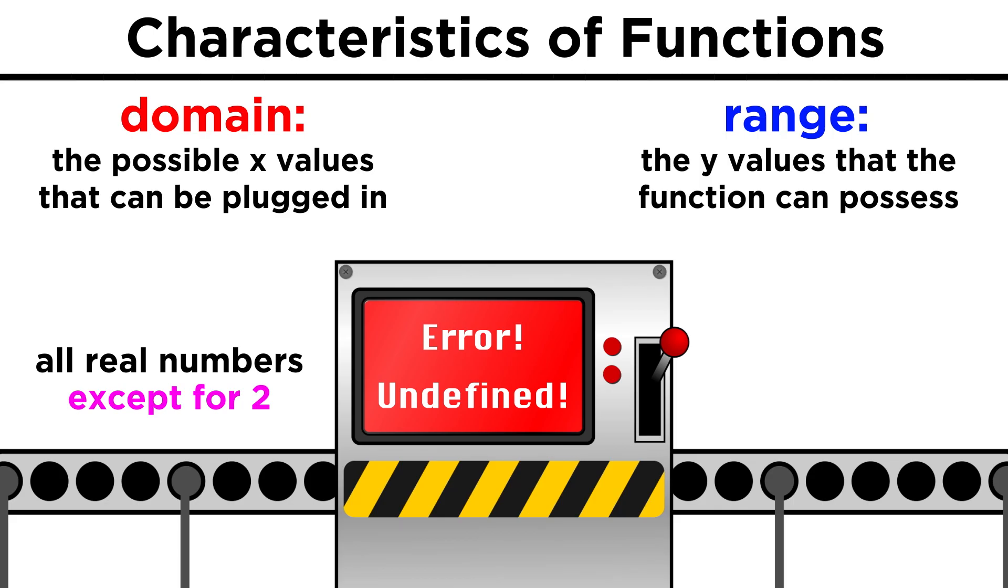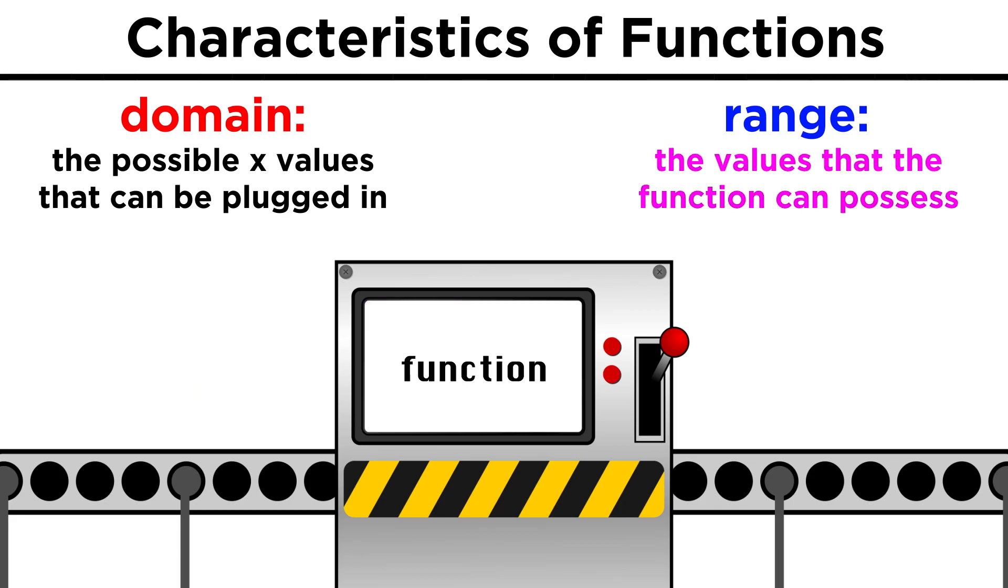The range, on the other hand, is all the potential output values, or essentially the values that the function can possess. Again, something simple like f of x equals two x plus one will yield a range that includes all real numbers, extending to infinity in each direction.